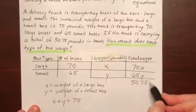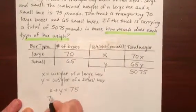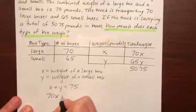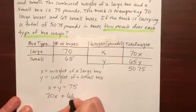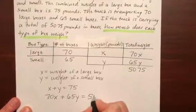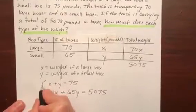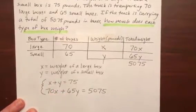And so I can use this to make my second equation, add up the weight of the large boxes, 70x plus the weight of the small boxes, 65y equals the total weight, 5,075 pounds. And now you see that this is my system that I'm going to be solving.